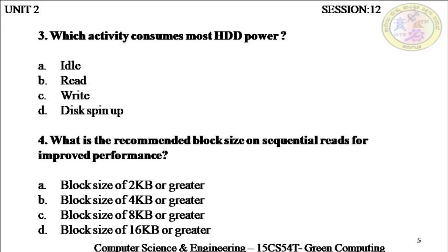Question number four: what is the recommended block size on sequential reads for improved performance? This question is related to experiment one on data efficiency and managing disk input and output operations. In that experiment, whenever your application reads a really huge file in a sequential manner, the energy consumption is more. But when this file was broken down into different sizes and the power consumed was measured, the most effective was a block size of 8 KB or greater — option C. So when a 1 GB file was broken into 8 KB blocks or more, power consumption was minimum and energy efficiency was maximum.